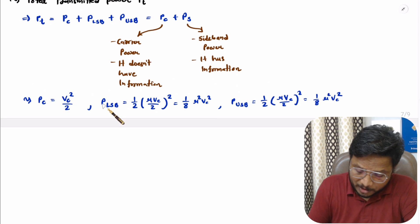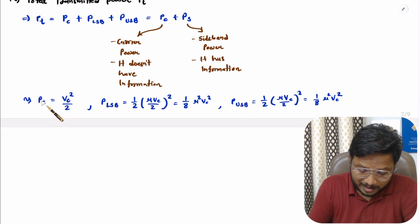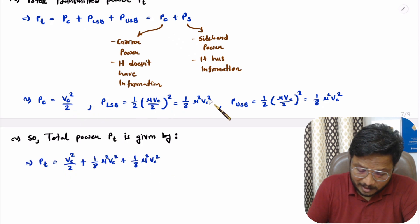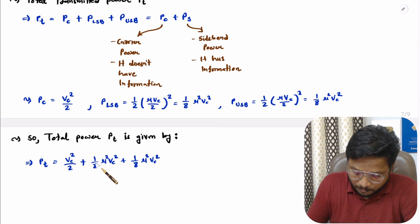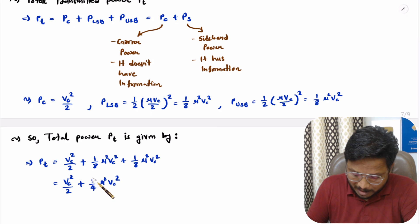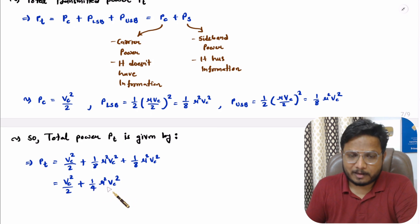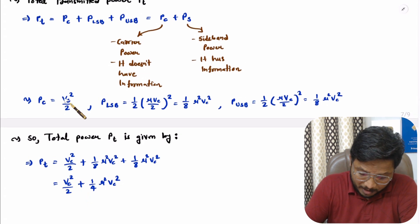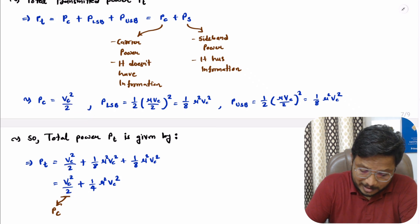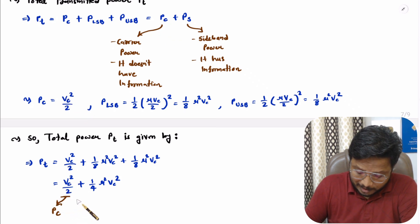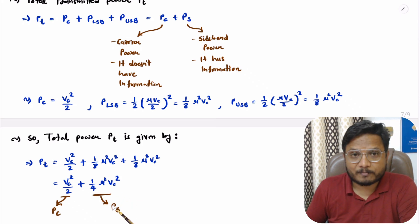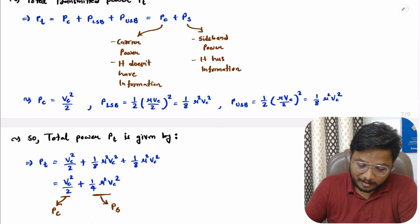Now we have power due to LSB, USB, and the carrier signal. The total power is their algebraic sum. Combining the two sideband terms: (1/8)μ²VC² + (1/8)μ²VC² = (1/4)μ²VC². So the total transmitted power is PT = VC²/2 + (1/4)μ²VC², where VC²/2 is the carrier power PC and (1/4)μ²VC² is the total sideband power PS.